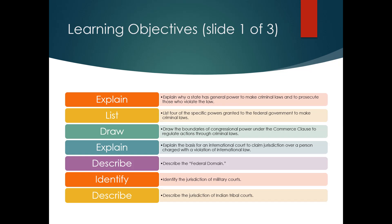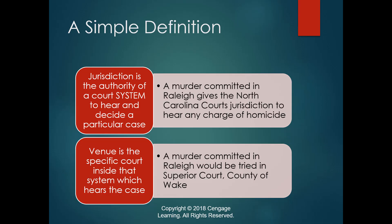We've got our learning objectives — not too much there that should concern most of us. We're going to talk about the different ideas of jurisdiction, which is a little more complicated than it first appears, much like most of criminal law. Let's start with a very simple definition: jurisdiction is simply the authority of a court system — emphasis on the term 'system' — to hear and decide a particular case.